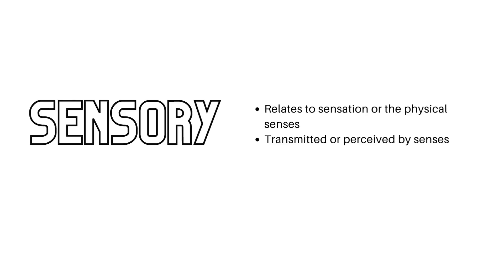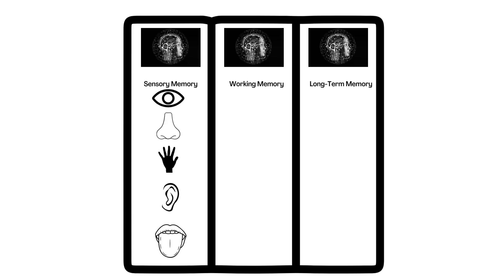So let's talk about sensory memory. The word sensory relates to sensation or the physical senses — anything transmitted or perceived by the senses. The early childhood and elementary school teacher in me would tell you to draw an eye for sight in that first column, a nose for smell, hands for touch, ears for sound, and a tongue for taste. So I think I'm going to do that — let me give you some time to draw those items under sensory memory.